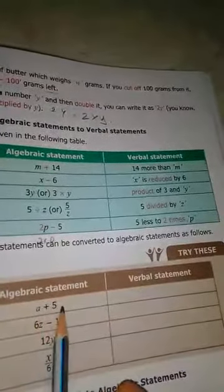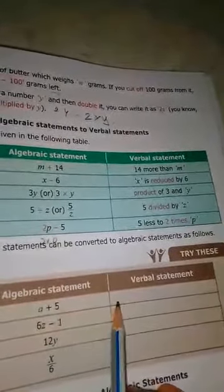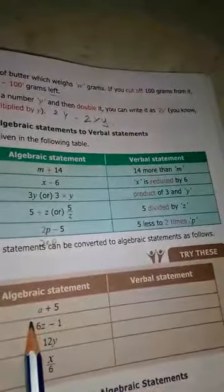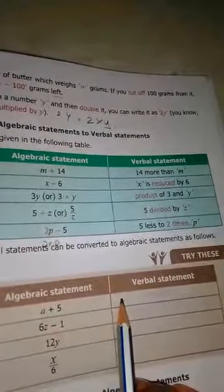Okay children, here 'try this' is given. You can write a plus 5. That means '5 more than a'. You can write here. Complete this one.